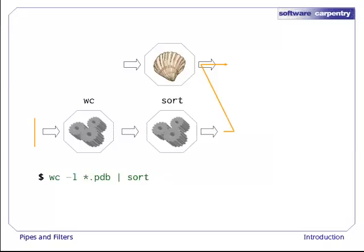Here's what happens when we run wc -l *.pdb pipe to sort instead. The shell creates two processes, one for each component of the pipe, so that wc and sort run simultaneously. The standard output of wc is fed directly to the standard input of sort.